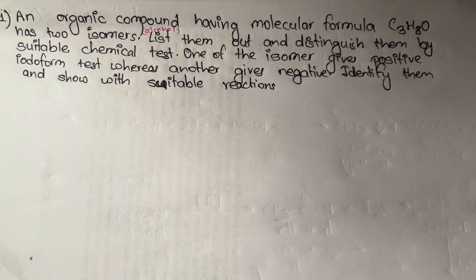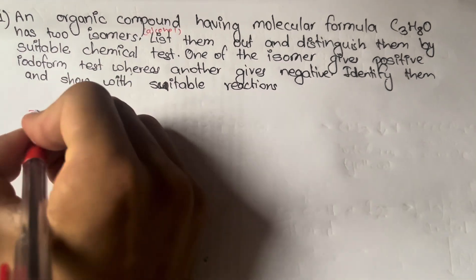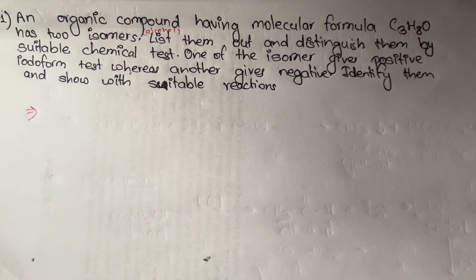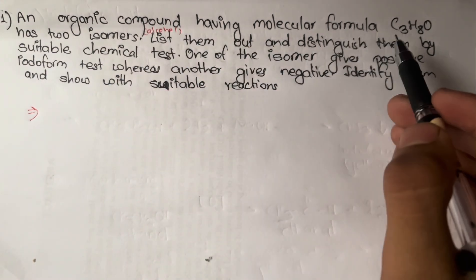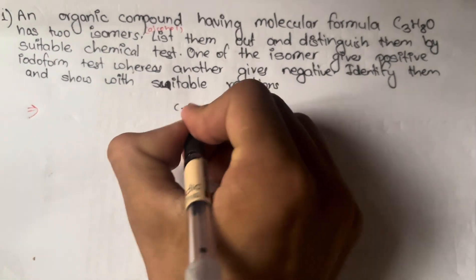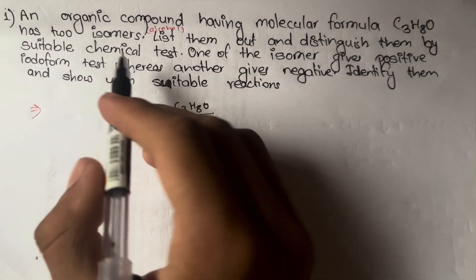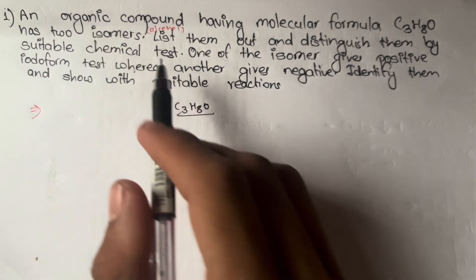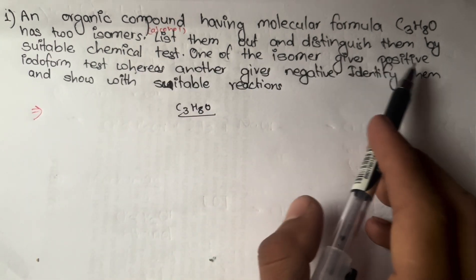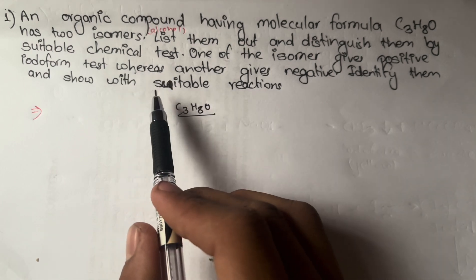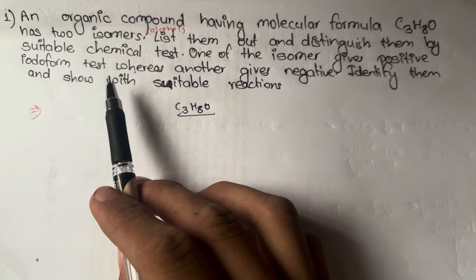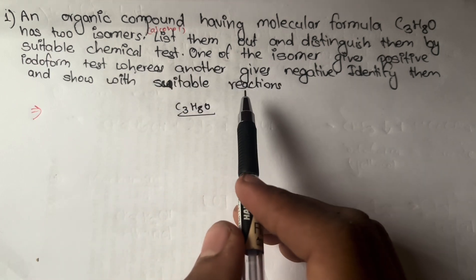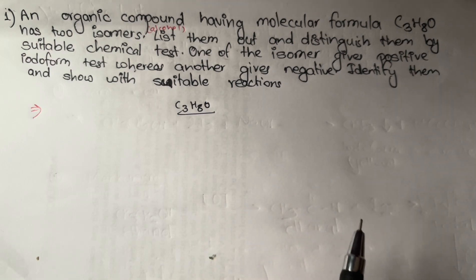Hello and welcome back to Nepal Chemistry Classes for 11-12. We have all the important questions listed out from the lecture, including board exam questions. The formula given is C3H8O. It has two isomeric alcohols and we have to list them and distinguish them by a suitable chemical test like the Victor Meyer method. One gives a positive iodoform test and another gives a negative result.